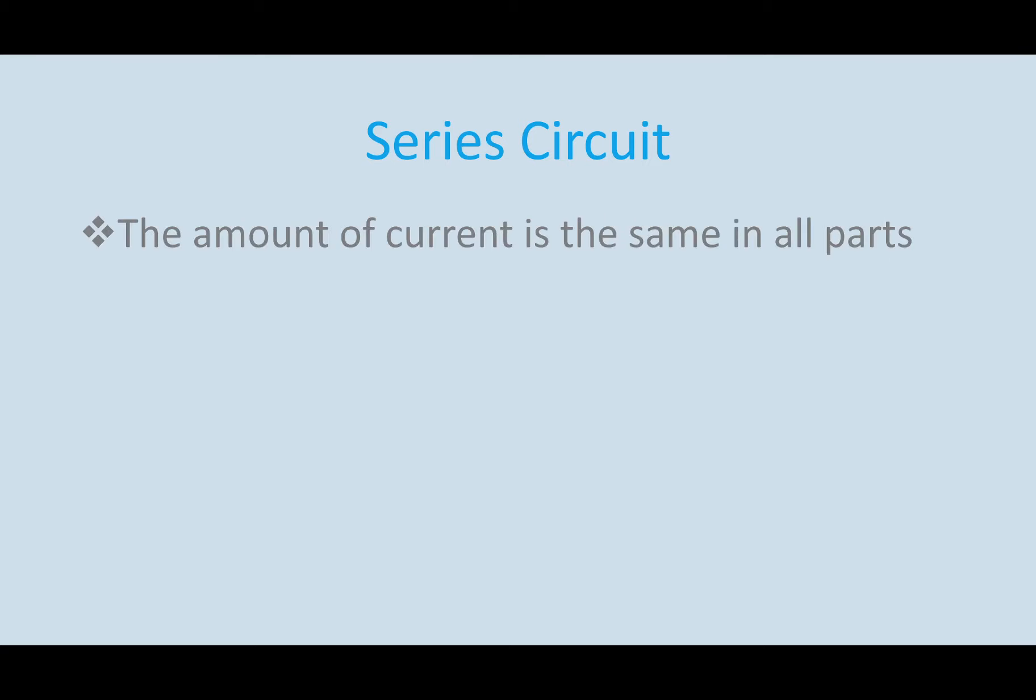In a series circuit, the amount of current is the same in all parts. The current is the same throughout the entire circuit, which makes sense because there's only one path for the electrons to travel on. If you add loads or light bulbs, like a buzzer or a speaker, whatever it happens to be, the resistance increases. Resistance is basically how difficult it is or something that restricts the flow of electricity. By adding more loads, we're slowing down that current because it's got to travel through more objects.